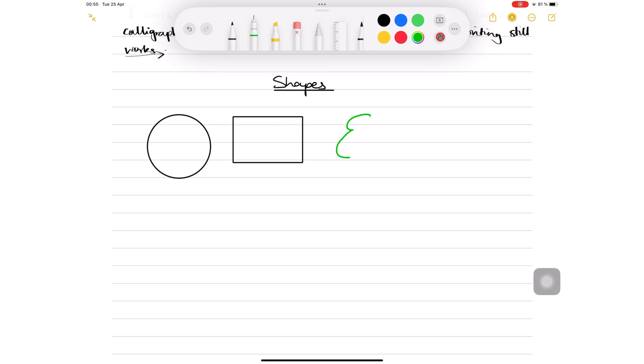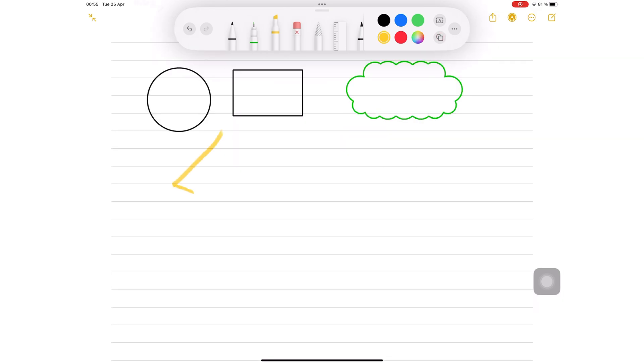For hand-drawn shapes, you can use any writing tool. Once you've drawn a shape, keep your Apple Pencil pressed on the screen until it transforms.